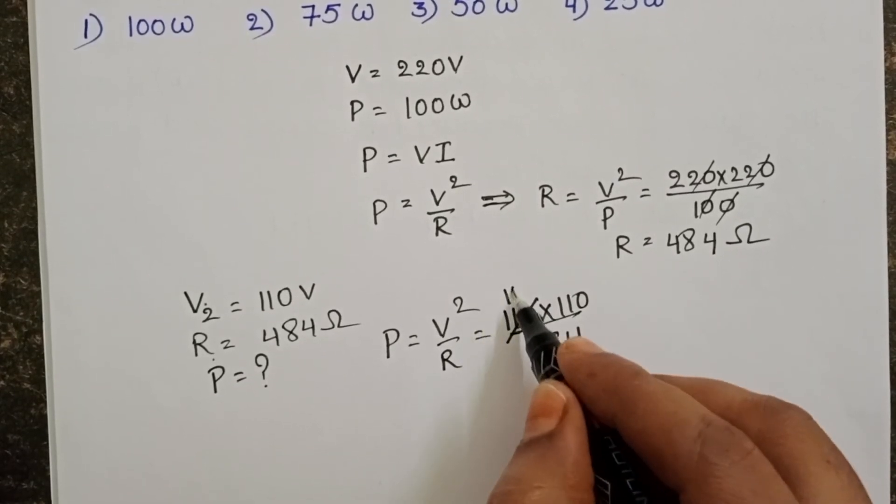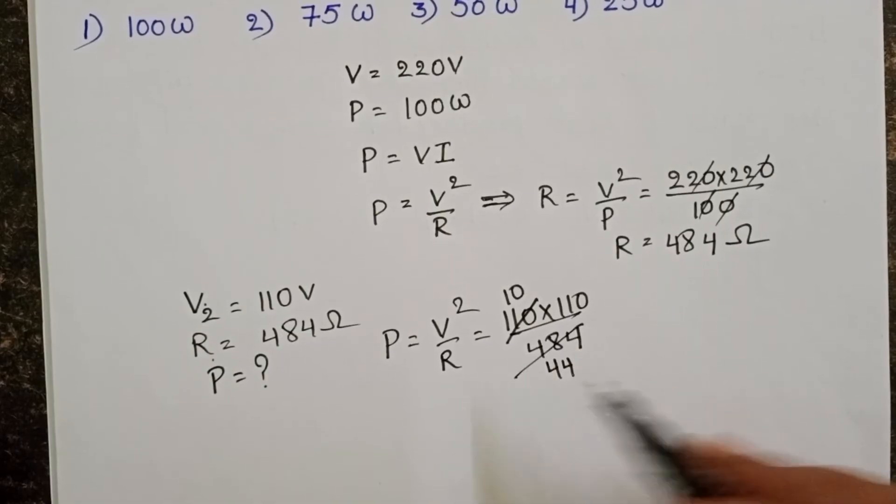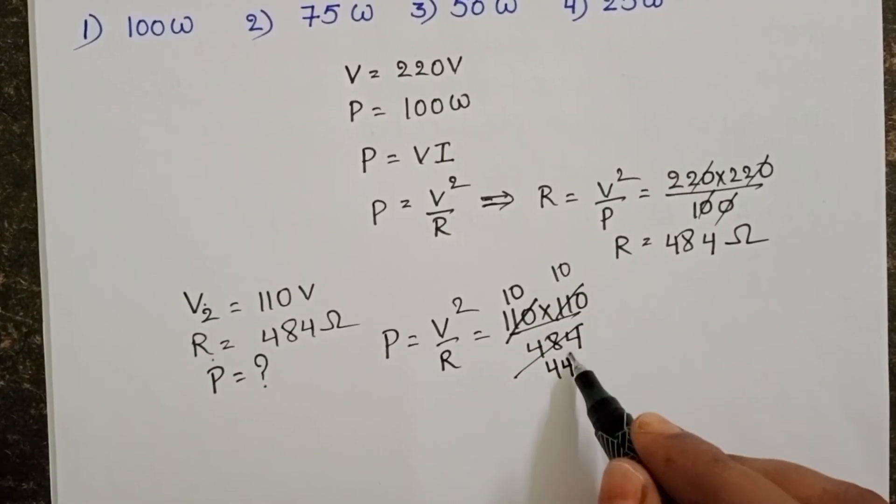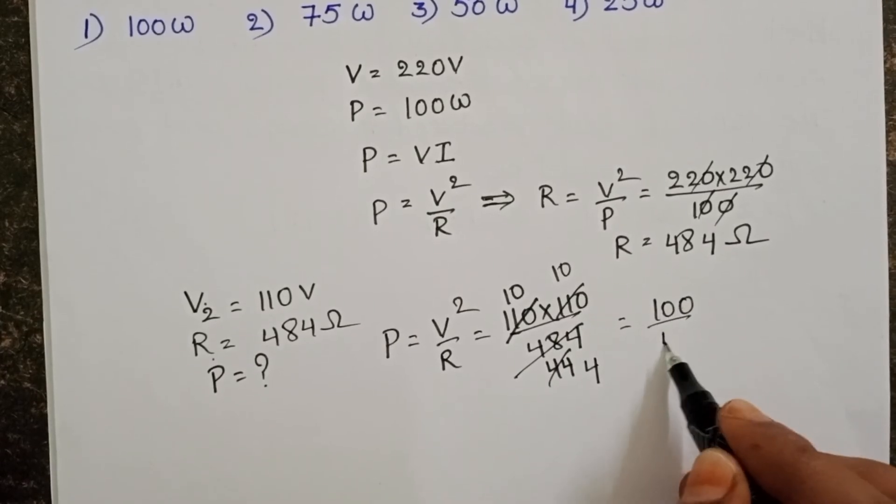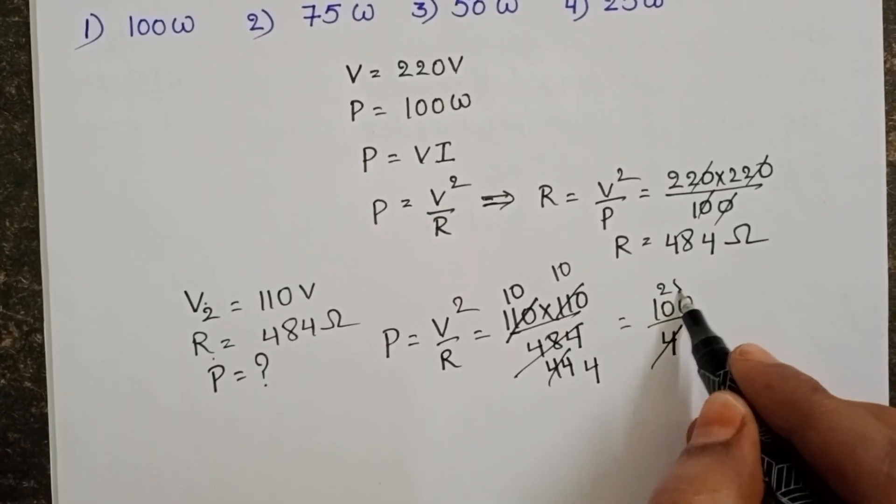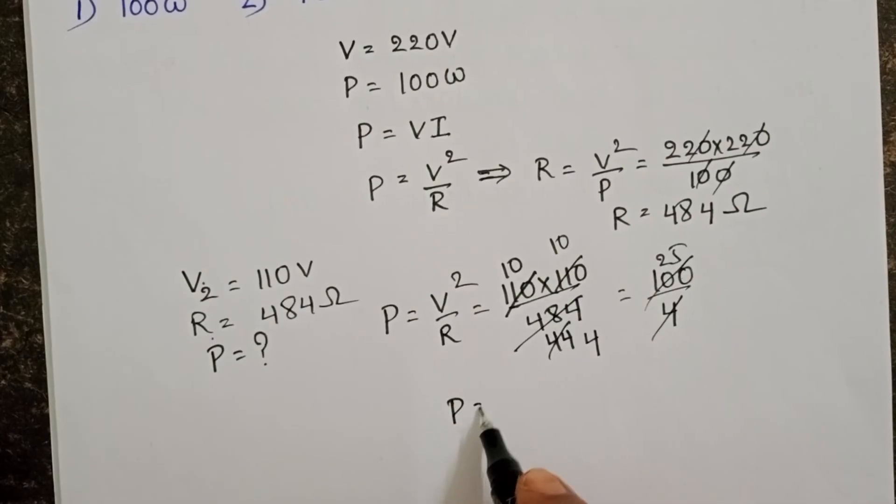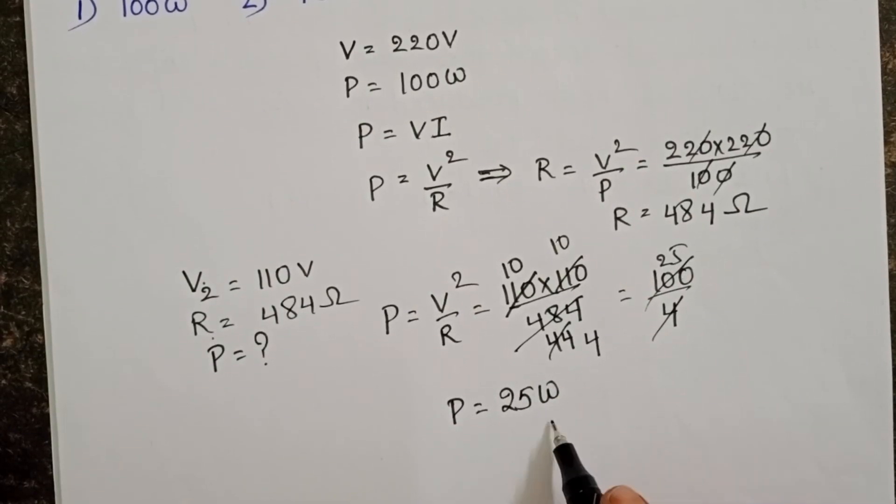11 tens, 11 forty fours. Again 11 tens, 11 fours. 100 by 4, four twenty fives. Power is equals to 25 watts.